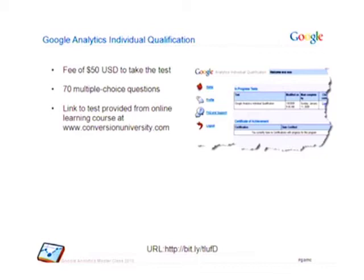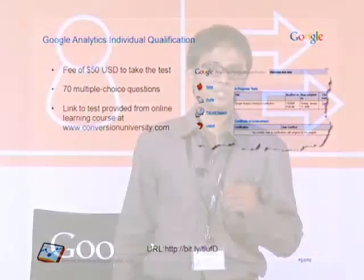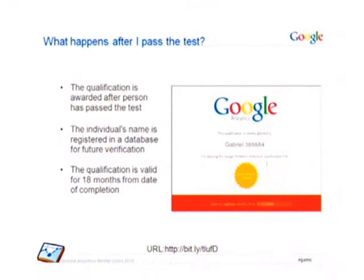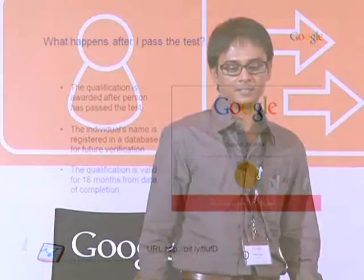This test costs 50 USD, it has 70 multiple choice questions, and you can take the test by going to conversionuniversity.com. I would like to mention that all the attendees should have received a voucher code for the test, so you can take it for free by registering online. The voucher code expires in two months. After you pass the test, you are provided a certificate by Google confirming that you are well-versed with the product and are a certified, authorized individual consultant. This certificate is valid for the next 18 months after you pass the test.